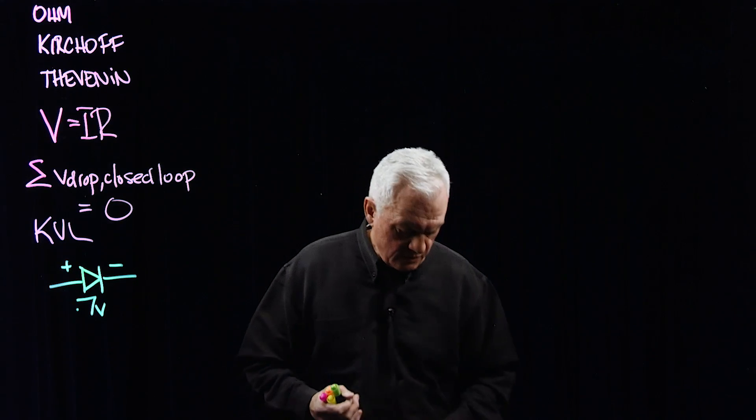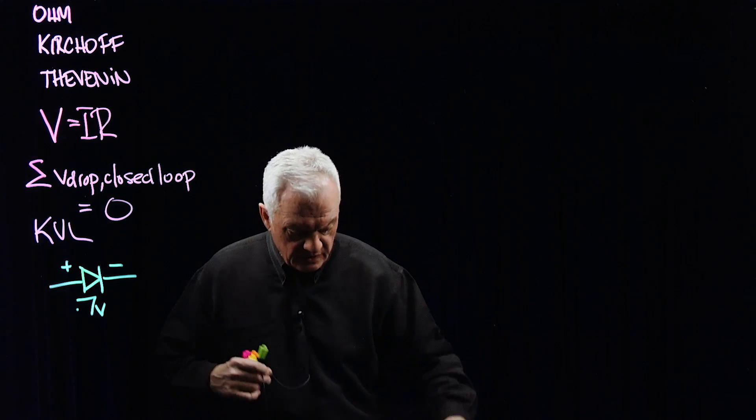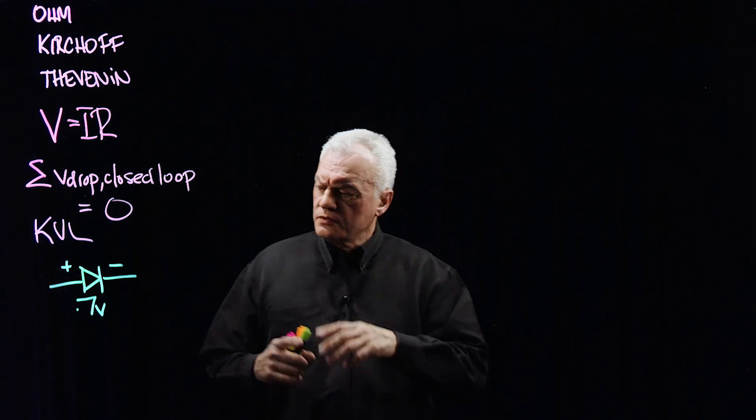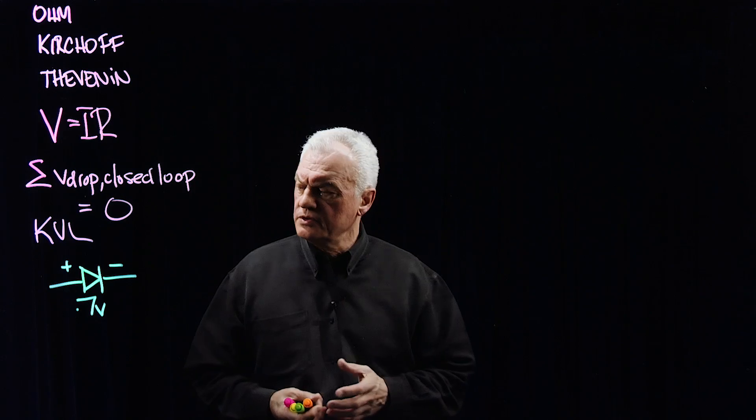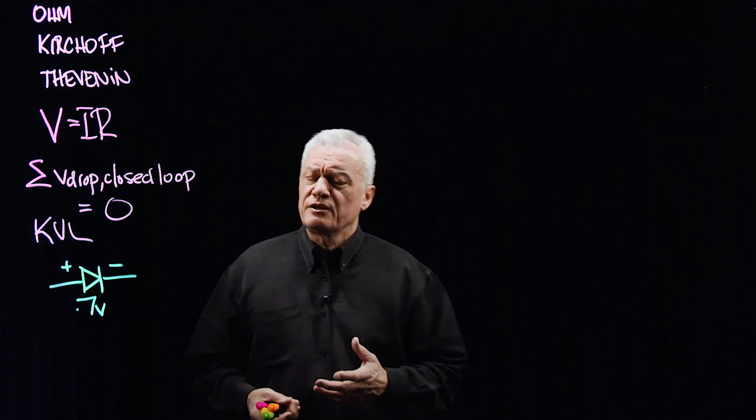We've also mentioned a diode, in this case a silicon diode, which has a 0.7 volt drop, which then in a circuit you can accommodate using Kirchhoff's voltage laws to understand what are the voltages at other points in the circuit.